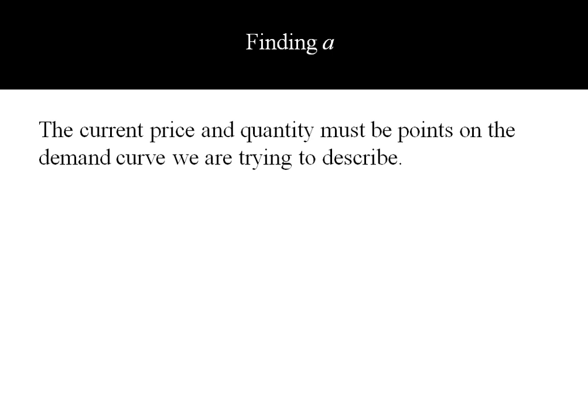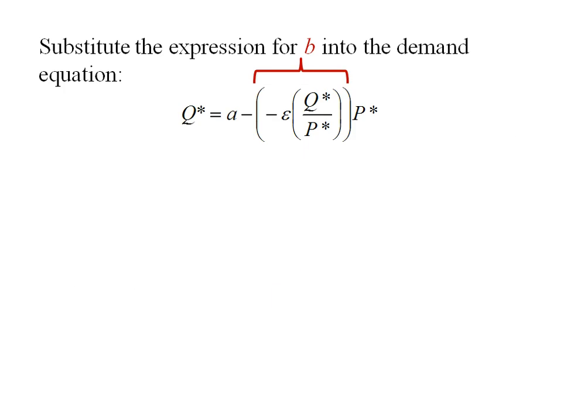Now let's find A. The current price and quantity we know have to be points on the demand curve that we're trying to describe. So Q star and P star are part of this specific demand curve. Now we just derived B as the negative of the elasticity times Q star over P star. So we can substitute this expression into our demand equation.